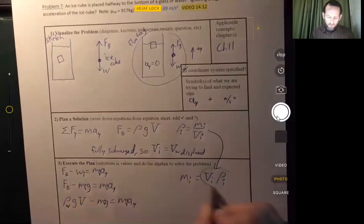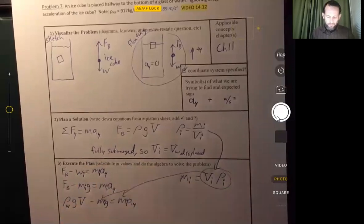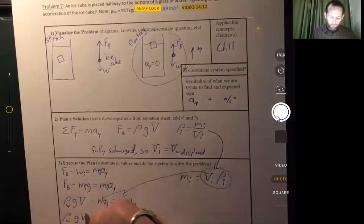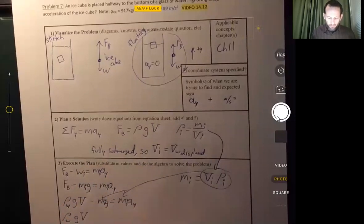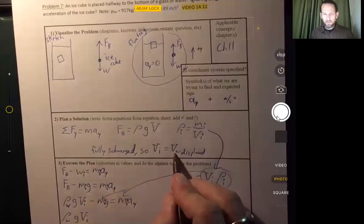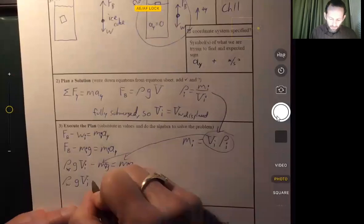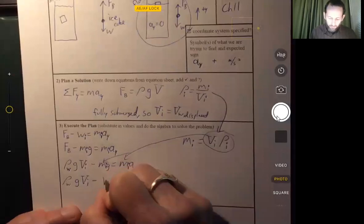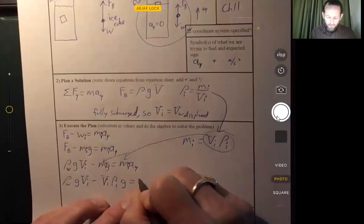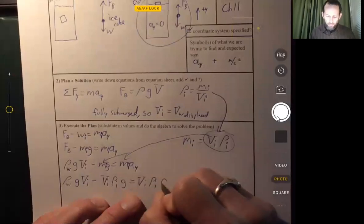So we can take this and we can put it in here and there. So then we have density of water times G times the volume. And that's the volume of the ice cube because remember the volume of the ice cube and the volume of water displaced are the same. Let me put that in there. Volume ice, density of ice times G equals volume of ice, density of ice times A sub Y.